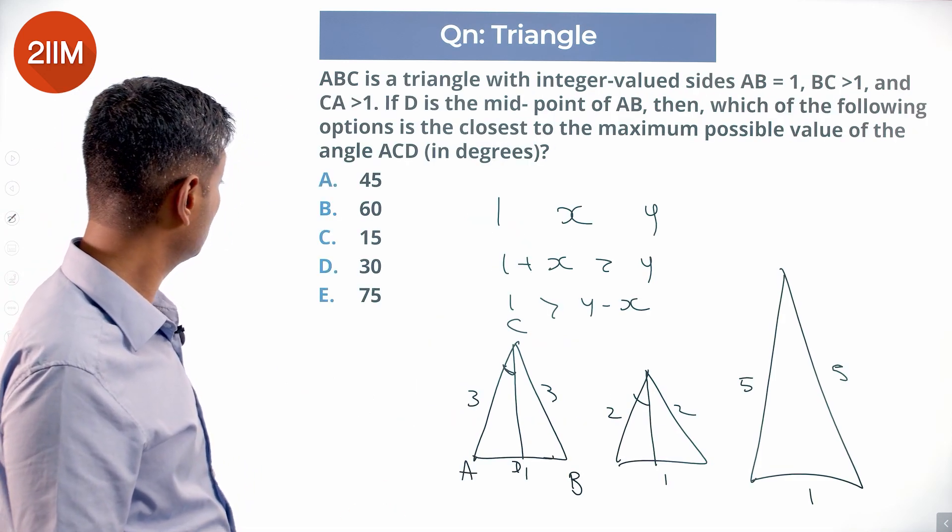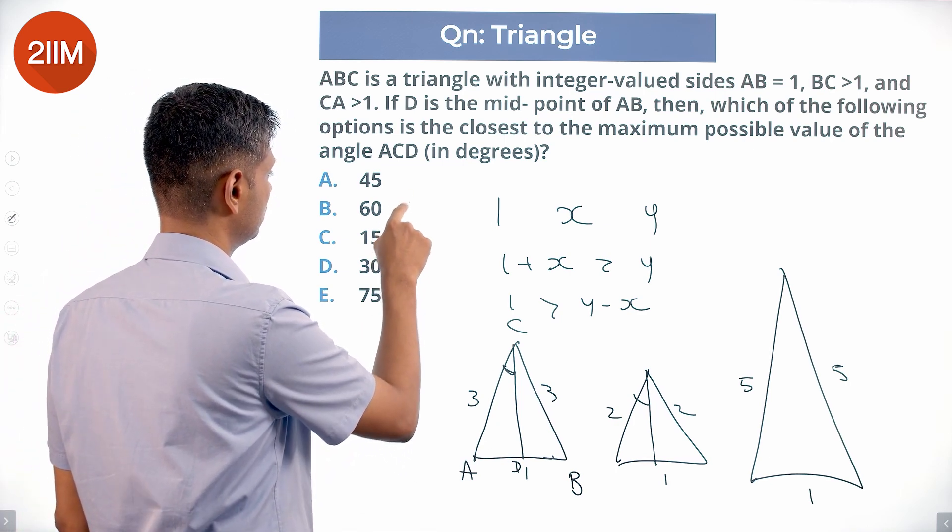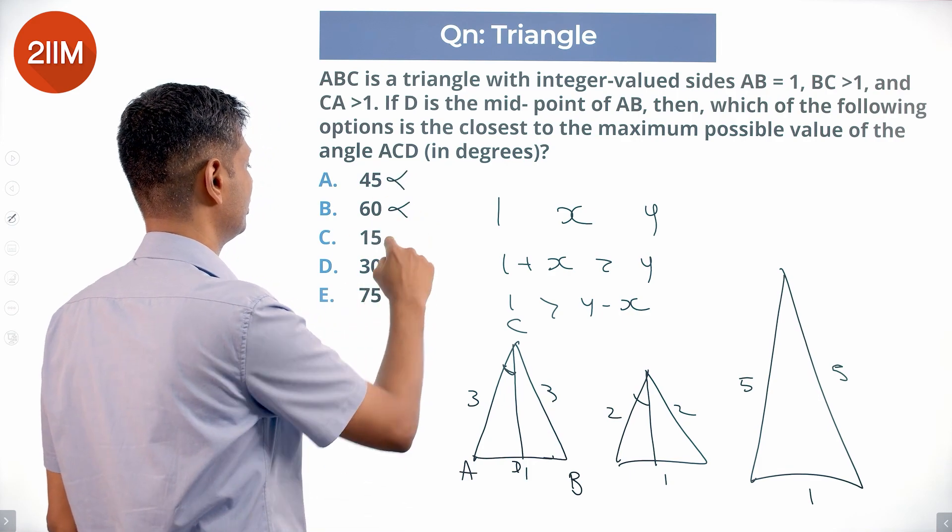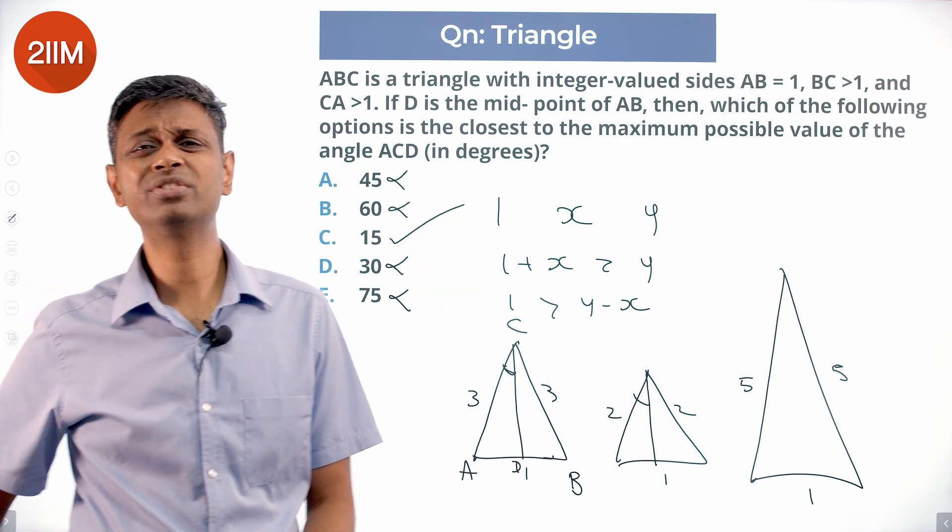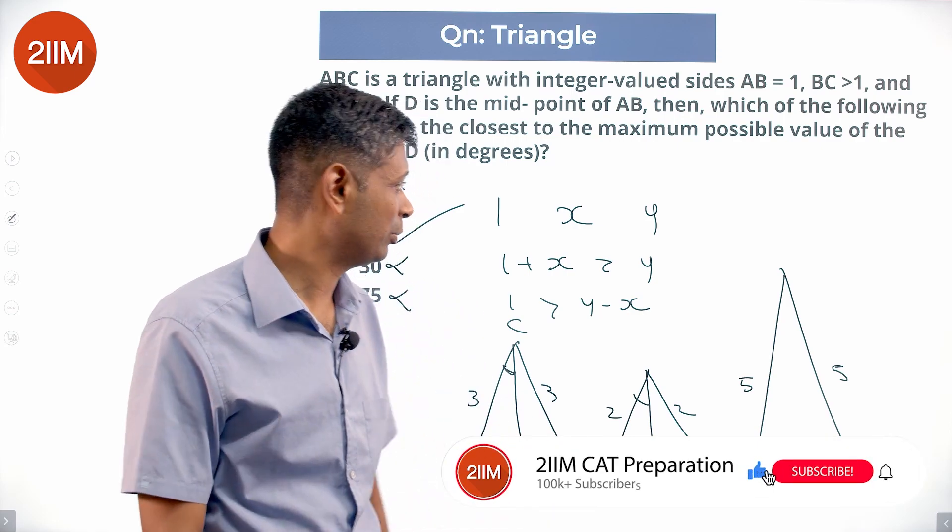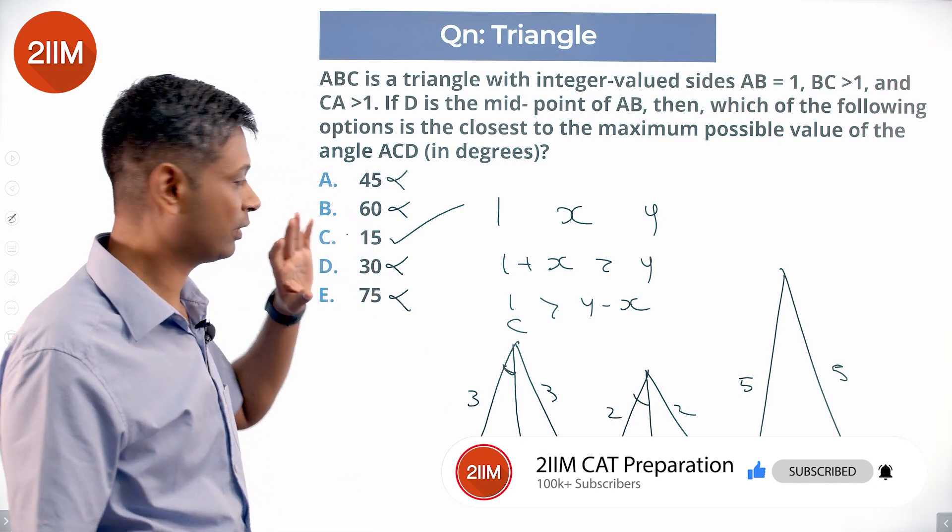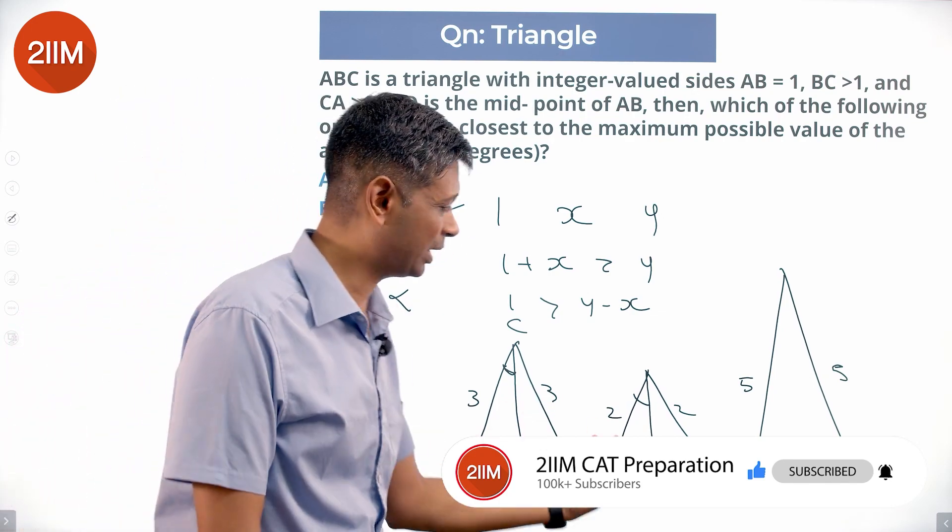Our angle is definitely less than 30, closest to the maximum possible value. So it is less than 30 - so not this, not this, not this. Sine 15 must be close to 1 by 4. I don't think it'll be 1 by 4 exactly, but it must be close to 1 by 4. That's the answer.